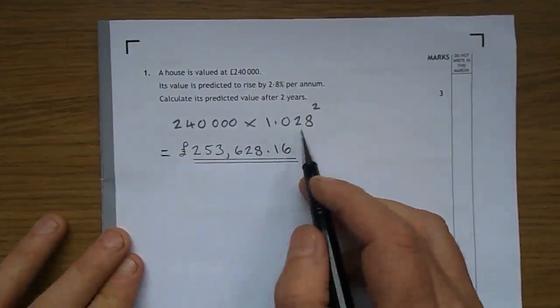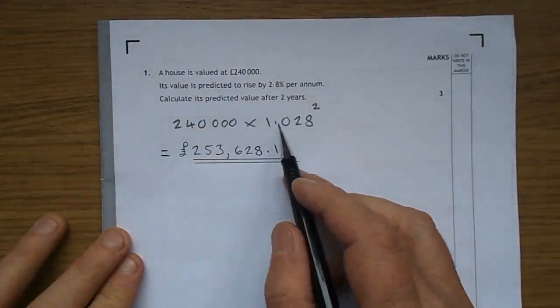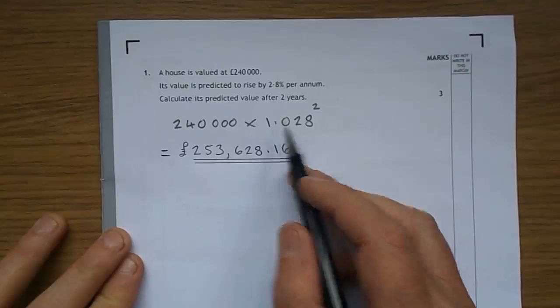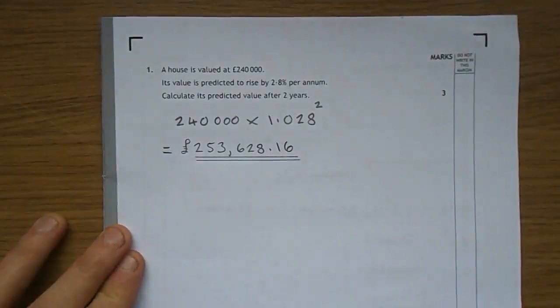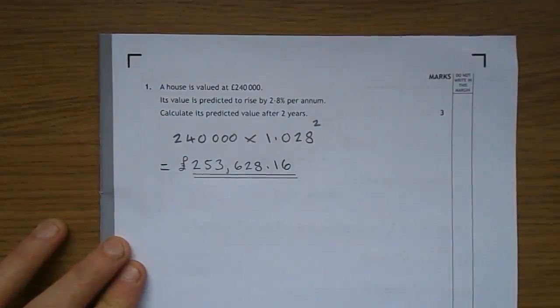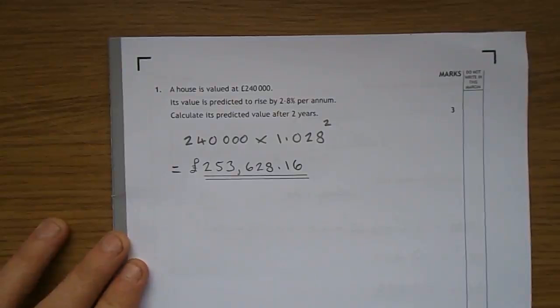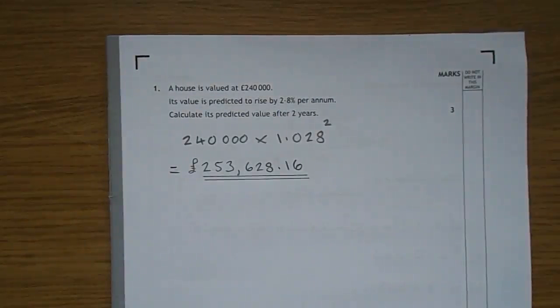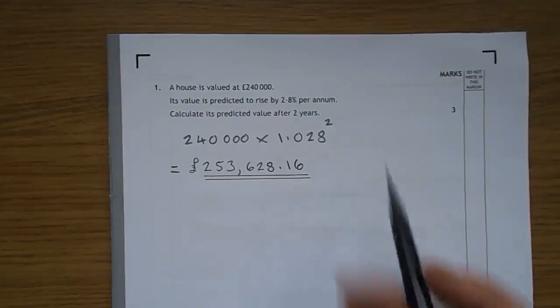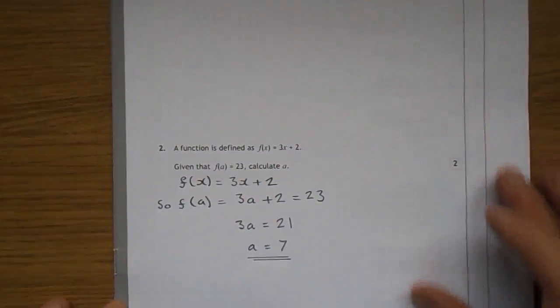I've done a few of these, but to add 2.8%, you think of 100, and you add 2.8, 102.8, and then you bring the point back there, that's the quick way to do it. It's over 2 years, so it's to the power of 2. So you take your 240,000 times it by 1.028 squared, and you get 253,628 pounds and 16p. No rounding off issues here, so that's just what I'm going to leave it as.